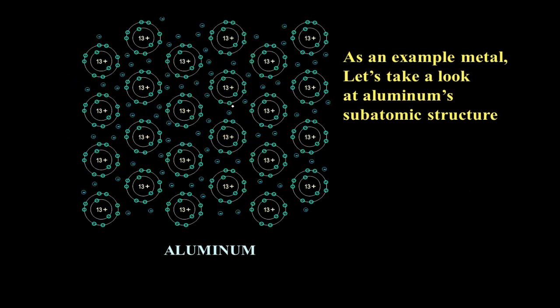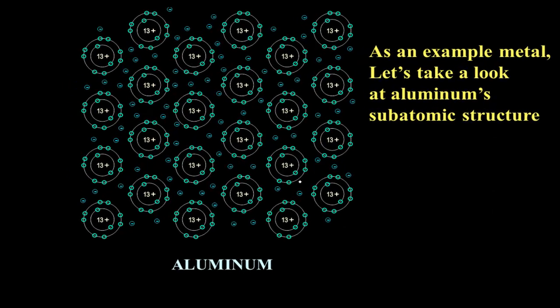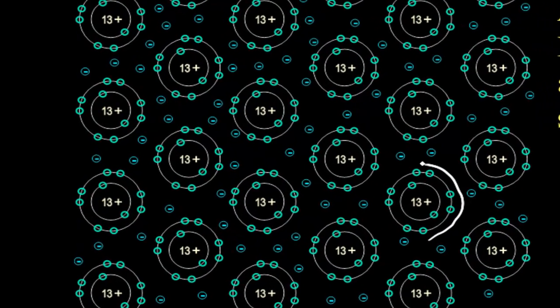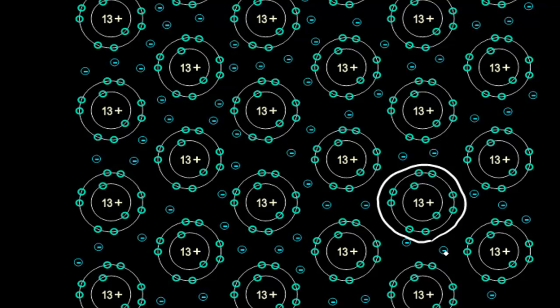So as an example, we'll take a look at aluminum. Looking at the subatomic structure, we can see each aluminum atom has 13 protons, but only 10 electrons. It has given up the three valence electrons to what is called the electron sea. This is why it's called the electron sea model.